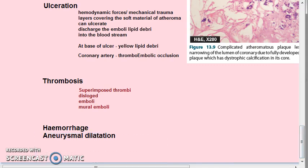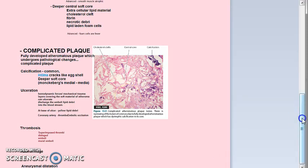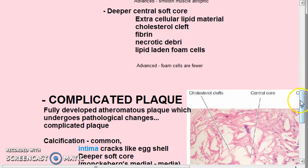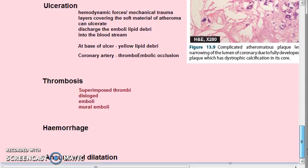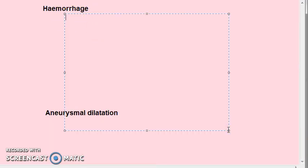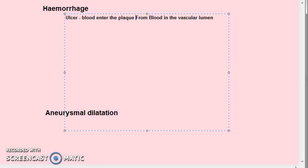So far in complicated plaque we have covered calcification, ulceration, and thrombosis. Now hemorrhage: intimal hemorrhage may occur in atheromatous plaque. Interestingly, we are talking about hemorrhage going into the intima. This can occur from blood in the vascular lumen — if there is an ulcer, blood can enter the atheromatous plaque from the lumen itself.